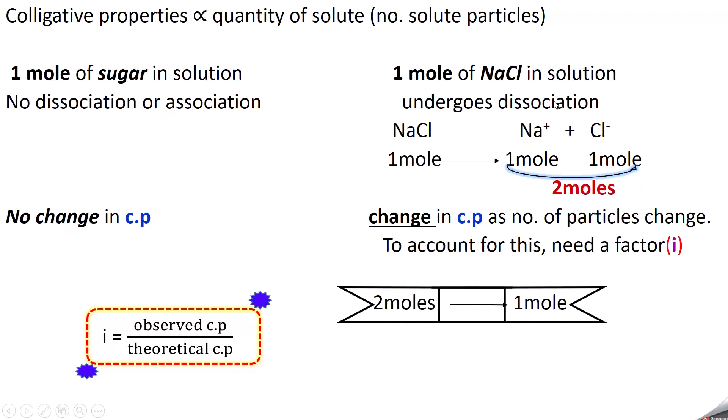This is the case with dissociation. With association, some molecules unite to form fewer molecules — for example, two molecules combine to form one. Here, two moles of solute particles are added, but in solution they are converted to one mole. There is a decrease in the number of moles, and therefore the colligative property changes since there is a change in number of particles.